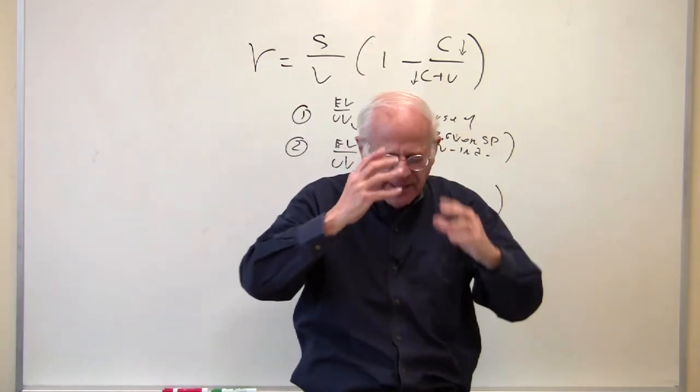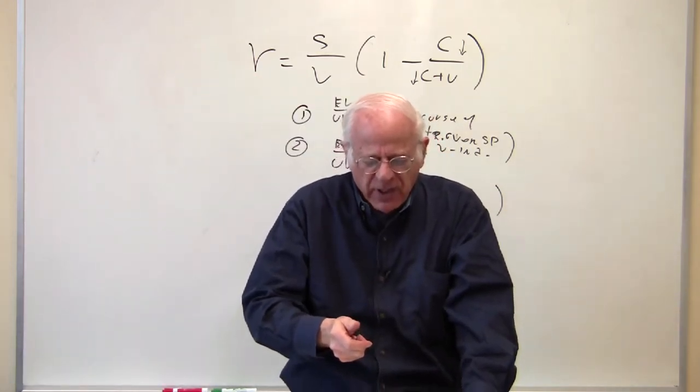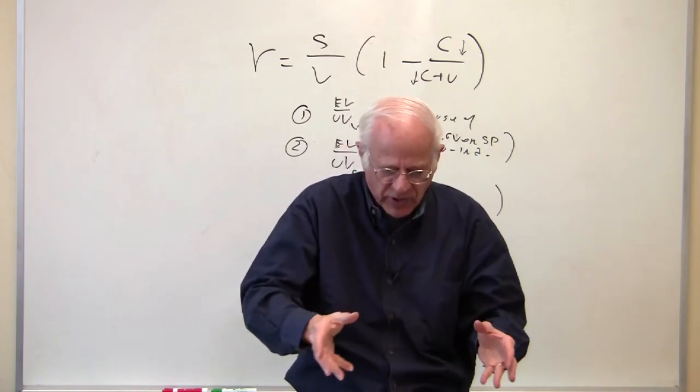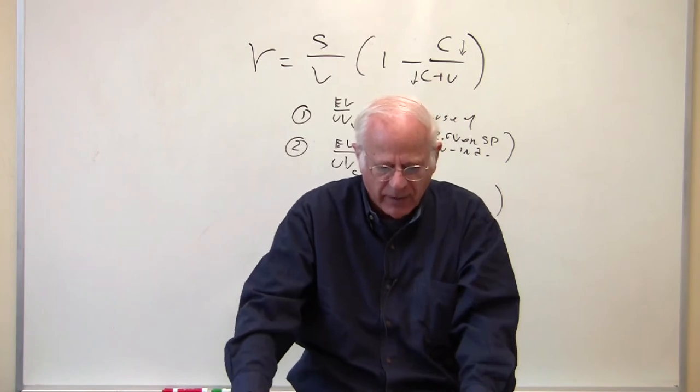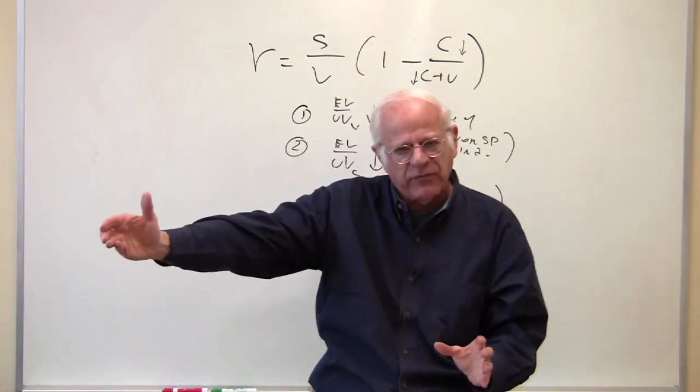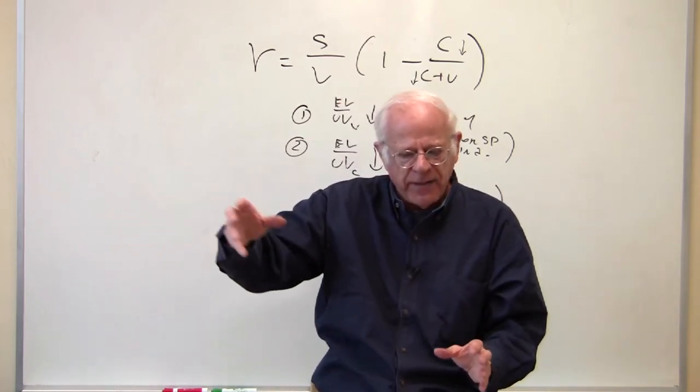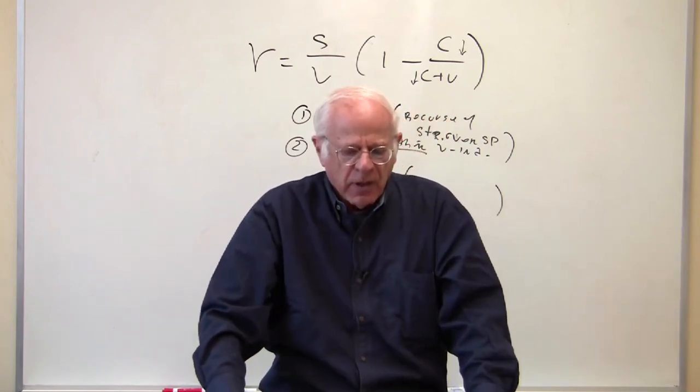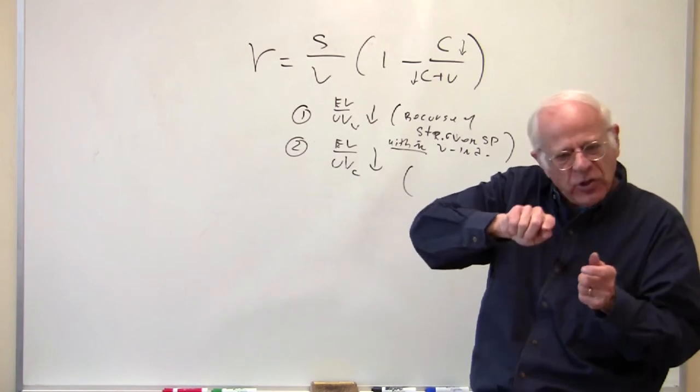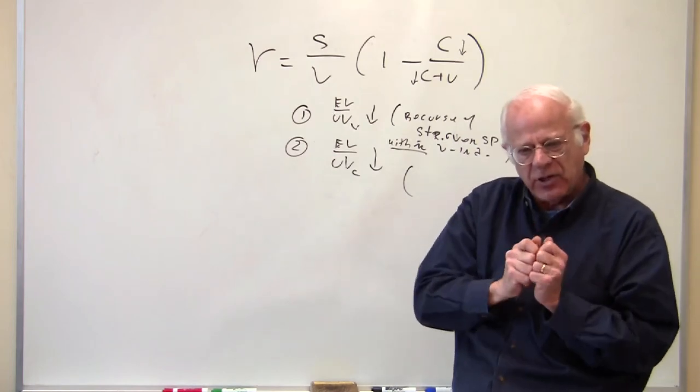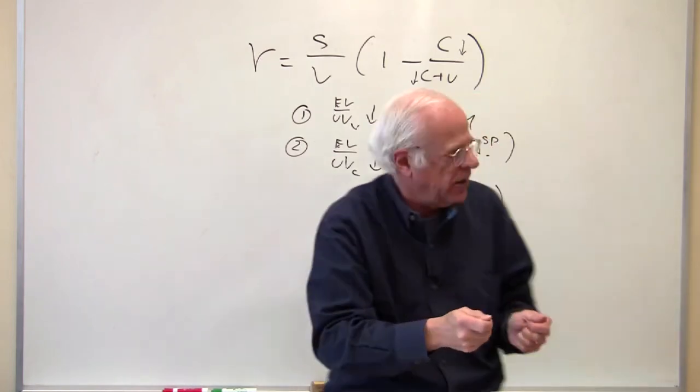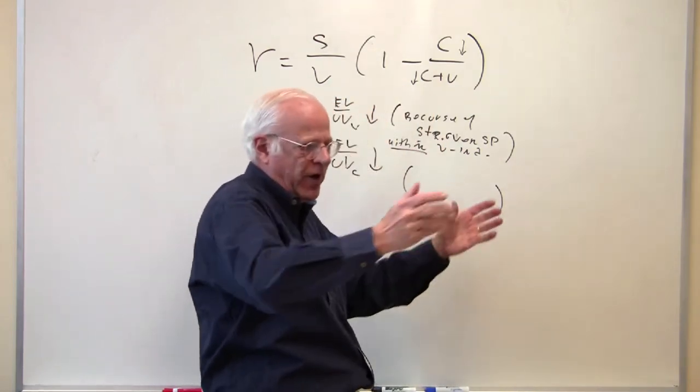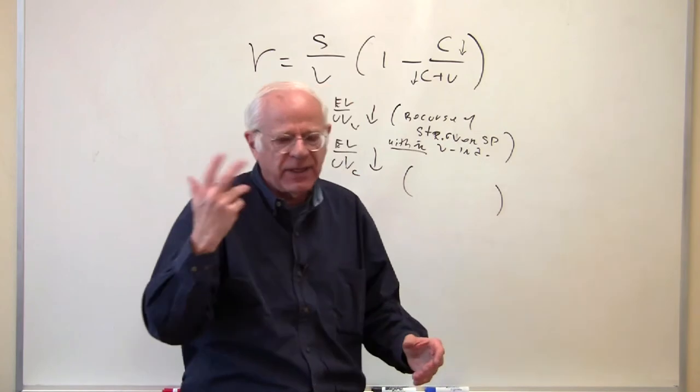We've got two different results then. Competition in the computer chip industry and other means of production industries are pushing the rate of profit down, and pushing it down means the risk of recession. On the other hand, the very cheapening of the means of production implies that those industries which are purchasing means of production get the benefit of a cheaper C, and hence that's going to push their rate of profit, and therefore the rate of profit in the economy, up.